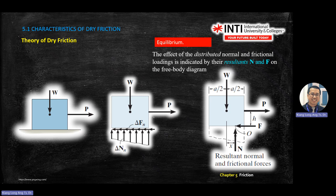We will study the unknown distance X from the center of the object. In previous lessons you always assumed N is at the center, but now we want to determine whether the object will be slipping, at the edge of slipping, or tipping over. So before starting the analysis, we assume there is a distance X from the center. If the question asks whether the object will slip or tip over, you must include this X.